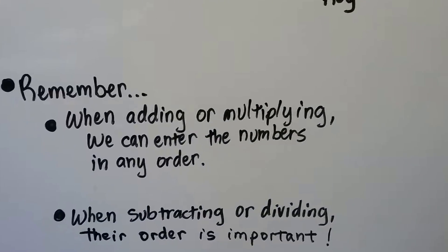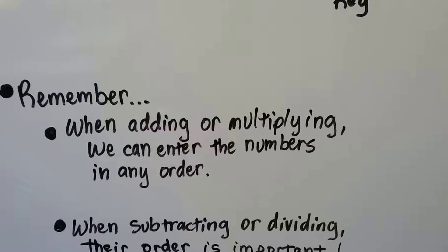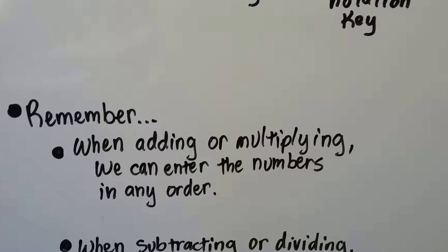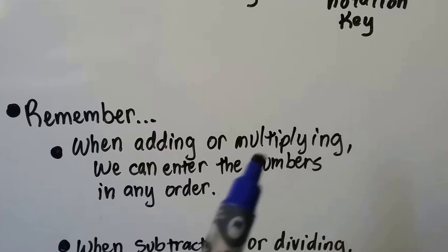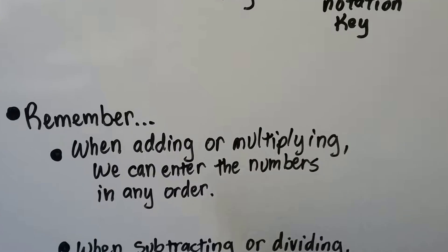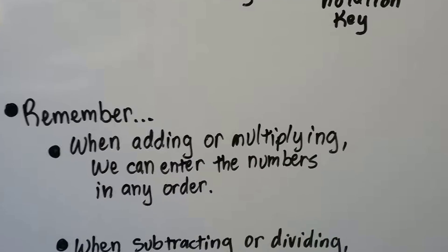So remember when you're adding or multiplying, we can enter the numbers in any order. The commutative property says we could do that. The commutative property of addition and the commutative property of multiplication say we can add or multiply in any order back or forth. It won't matter. We'll get the same answer.